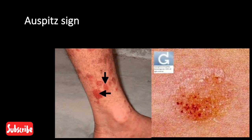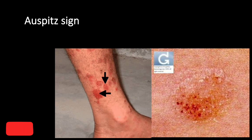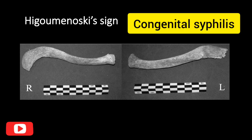Auspitz sign: it is seen in psoriasis. If the deep scales are removed, one or more tiny bleeding points are disclosed.